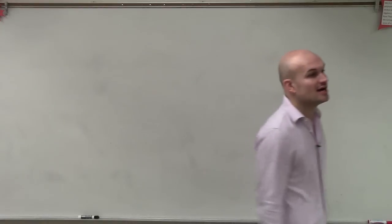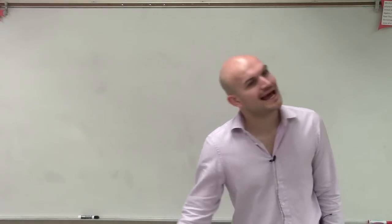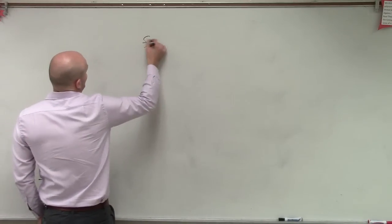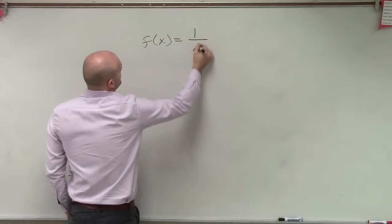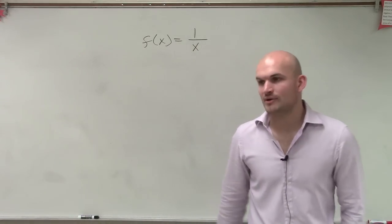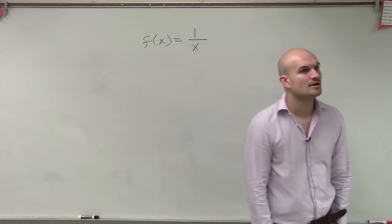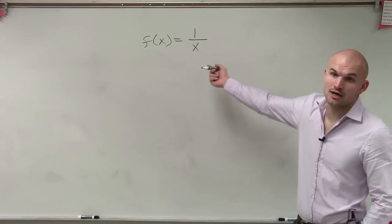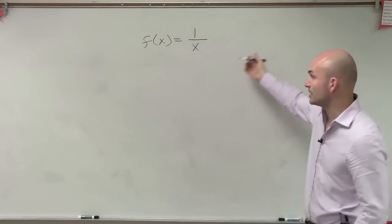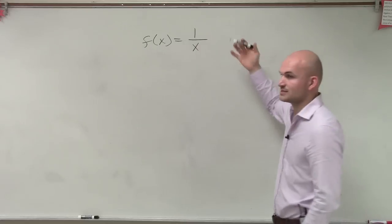So ladies and gentlemen, we've talked about many different functions. Now I'm going to introduce the last function of this course. The last function we're going to deal with is what we call the reciprocal function. You could say reciprocal — we have our identity function f of x equals x, and this is its reciprocal: f of x equals 1 over x.